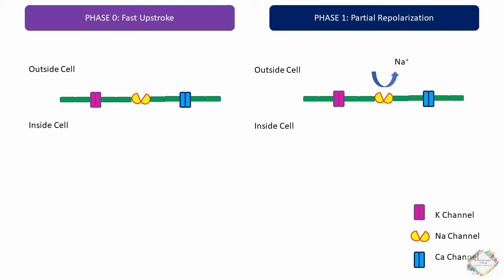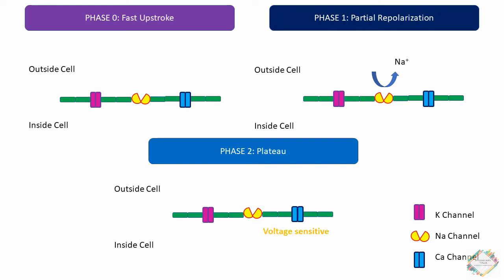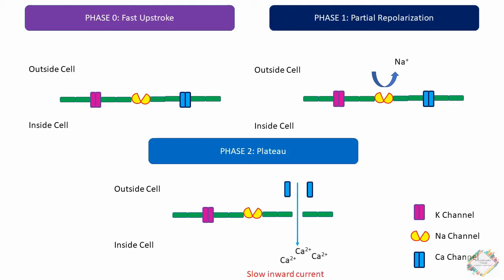In phase 2, the plateau, both the calcium and potassium channels open. The voltage-sensitive calcium channels open, resulting in a slow inward depolarizing current — that is, contraction — which balances the slow outward polarizing leak of potassium.